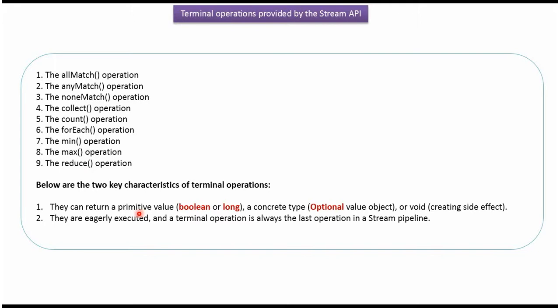Terminal operations can return a primitive value, a concrete type, or void. Terminal operations are eagerly executed, and a terminal operation is always the last operation in a Stream pipeline.